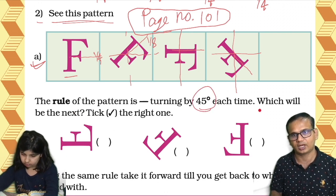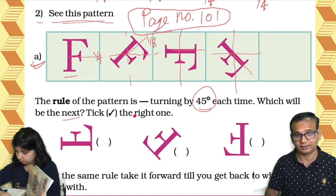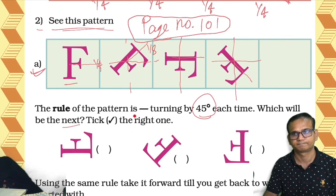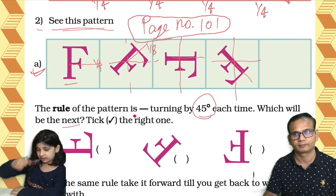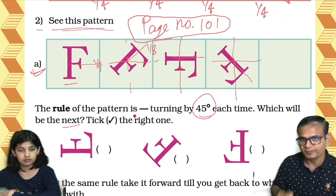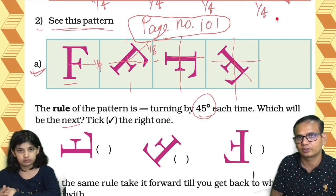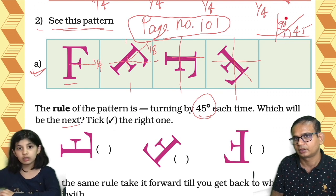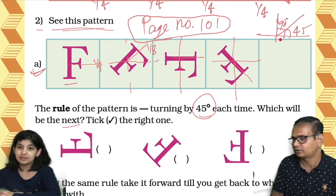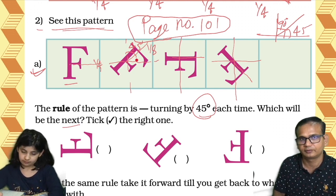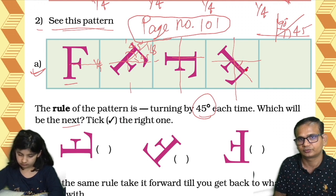So the rule of the pattern is turning by 45 degrees each time. But how will you find out that it is 45 degrees? Where is the 90 degrees? So here, if I draw this, this is 90 degrees and this is 45 degrees — half of 90 degrees. Half of 90 degrees — understood? So this is 45, this also 45, and this also 45.